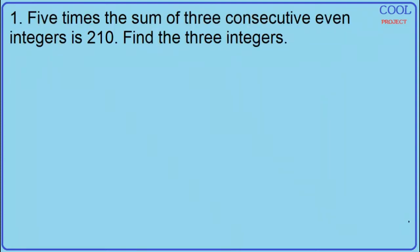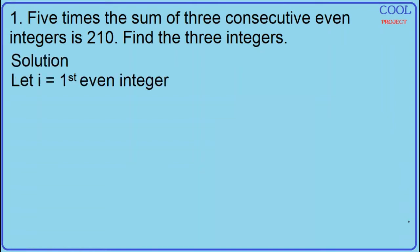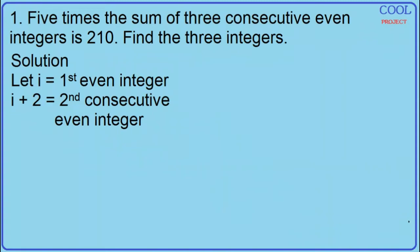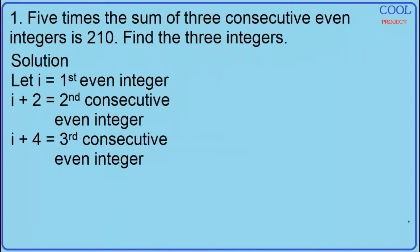5 times the sum of 3 consecutive even integers is 210. Find the 3 integers. Solution: Let i equal the first even integer, i plus 2 equal the second consecutive even integer, and i plus 4 equal the third consecutive even integer.